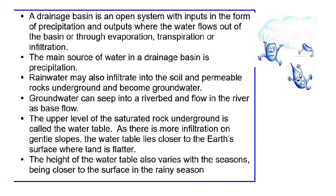The drainage basin is an open system, which means there can be inputs and outputs. The inputs are all precipitation, and in some cases there is also groundwater — this happens where a river's channel goes deep enough to intercept the groundwater. The water that then adds to the river is called the base flow. These particular rivers we would refer to on our map work as perennial rivers, because they will have water in them all year round.